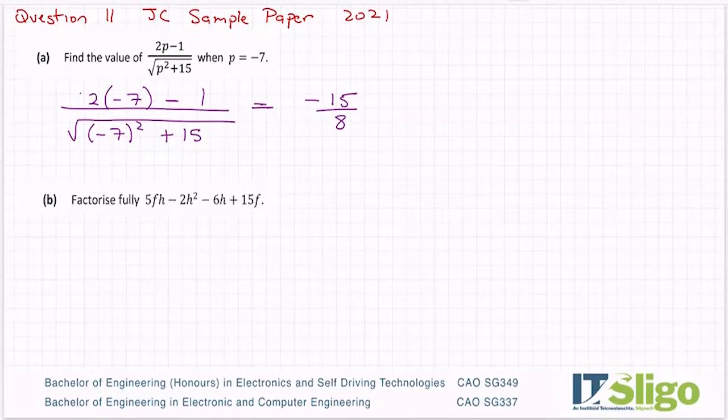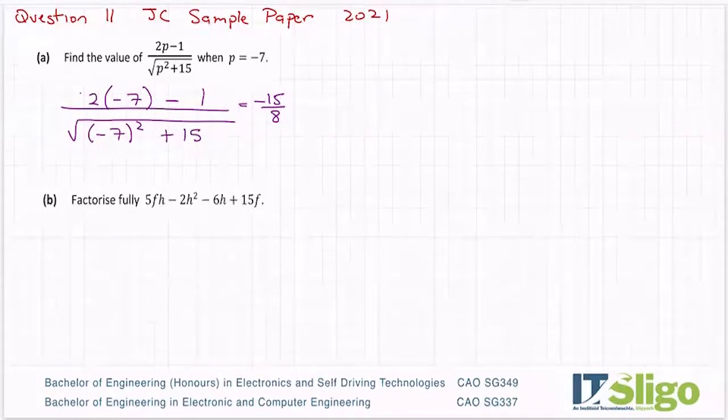So I hope that one's okay. Factorize fully. Let me move him in a bit because I'm going to need more room for that factorizing. So factorize fully FH, 5FH minus 2H squared minus 6H plus 15F. There's four types of factorization if you remember. There is grouping, which is this one. It's got four terms in it. That's how I know it's grouping.